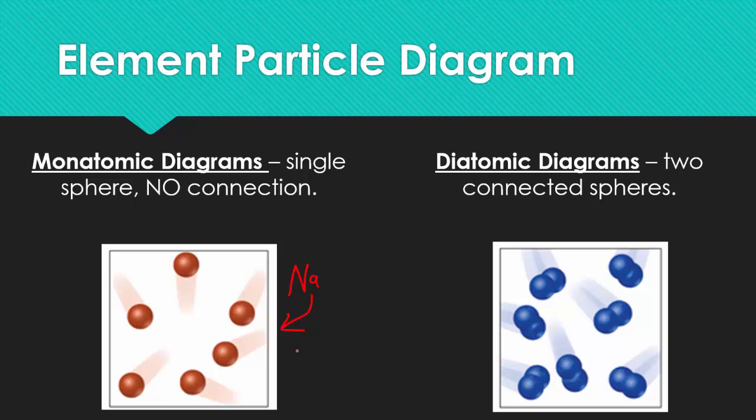The diatomic diagrams, however, remember we said there are two of the same exact kind of elements chemically combined together. So like O2, for example, they look exactly the same, but they're smushed together.